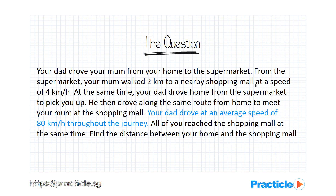Your dad drove at an average speed of 80km per hour throughout the journey. All of you reached the shopping mall at the same time, and you are supposed to find the distance between your home and the shopping mall. That sounds pretty confusing, right? Not only is the question long, there are also a lot of things that are happening.